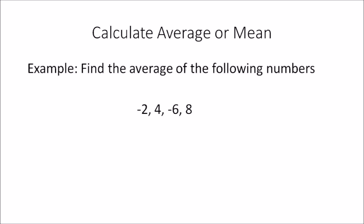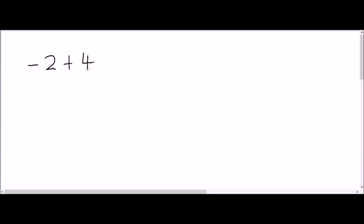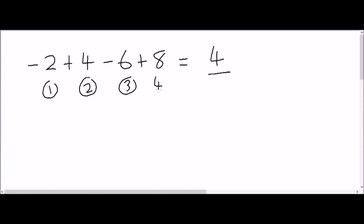Sometimes you can also get a question involving negative numbers. In this example you have minus 2, 4, minus 6, and 8. The formula remains the same — you add all the numbers, and adding a negative number means you're subtracting. So: minus 2 plus 4 minus 6 plus 8, which gives 4. There are 4 numbers in the set, so 4 divided by 4 equals 1. That's the average of these four numbers.